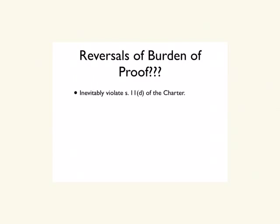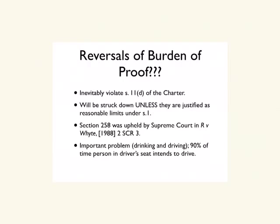Reversals of the burden of proof are automatically in violation of Section 11 of the Charter — that's just automatic. If the burden of proof is reversed, it will violate Section 11 of the Charter and will be struck down unless justified under Section 1. Every one of these in the Criminal Code is approached on a case-by-case basis. The one we just looked at — Section 253 — was upheld by the Supreme Court in the White case. The reason is they felt it was a reasonable limit: drinking and driving is an important problem, and they felt it was logical that 90% of the time a person in a driver's seat intends to drive, so it made sense to shift the burden onto the accused.